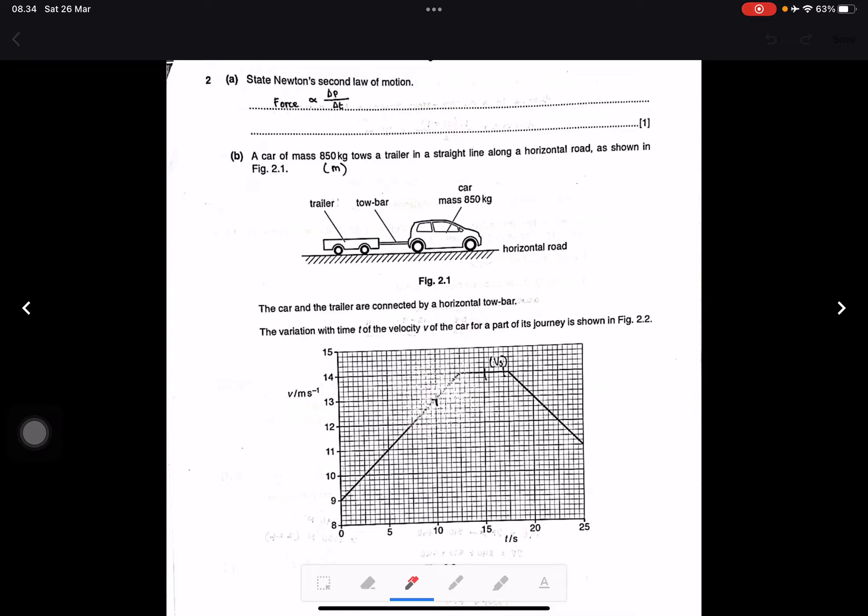Newton's second law is F equals ma, actually from change in momentum or rate of change of momentum, delta P over delta T. This is correct.